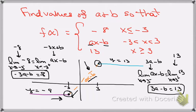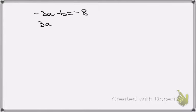Get to a clean page. So, minus 3a minus b is equal to minus 8, and 3a, go back and see what it was, 3a minus b is equal to 13.